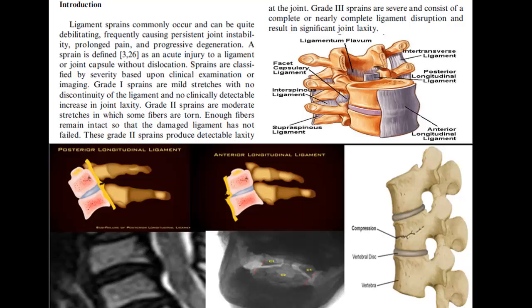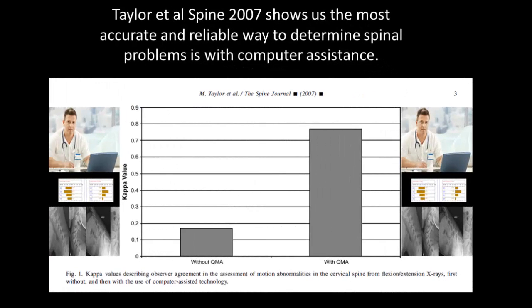Ligament sprains commonly occur, can be quite debilitating, frequently causing persistent joint instability, prolonged pain, and progressive degeneration. A sprain is defined as an acute injury to a ligament or joint capsule without dislocation. Sprains are classified by severity: Grade 1 shows no clinically detectable increase in joint laxity; Grade 2, you start to see detectable joint laxity; Grade 3, significant joint laxity. Determining this on x-ray has been proven most accurately and reliably through computerized radiographic mensuration analysis.